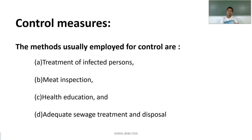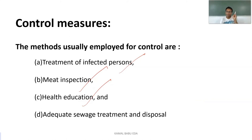Control measures for Taenia solium include: treatment of infected persons, meat inspection, health education, and adequate sewage treatment and disposal. Proper sanitation prevents eggs in the environment from being consumed by healthy individuals. Public health education ensures that people follow proper cooking principles so that meat is not undercooked.